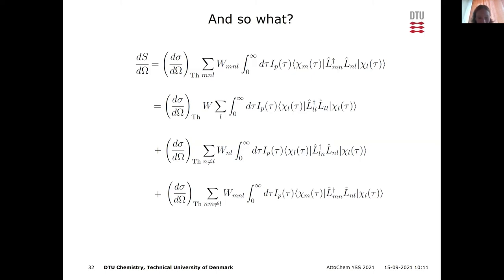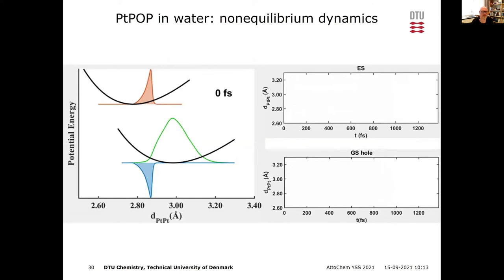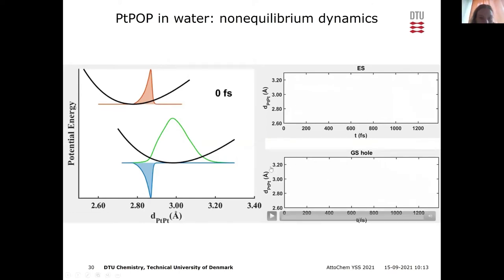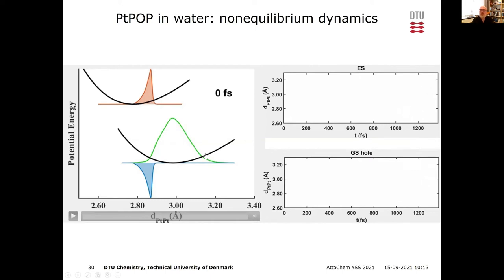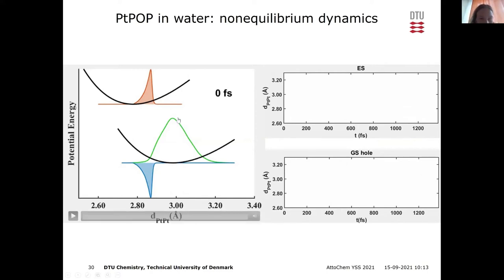You're absolutely right that we should extend to more states — this is a very emerging field. Our collaborator Adam Kirrander is pioneering the calculation of off-diagonal electronic matrix elements of the scattering operator. It's computationally very heavy and nobody else is doing it yet. We took H₂ because we were the first to do this, so you start with the simplest system.